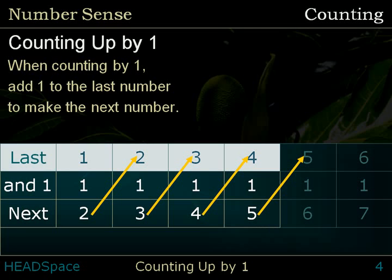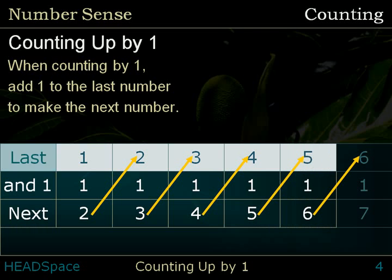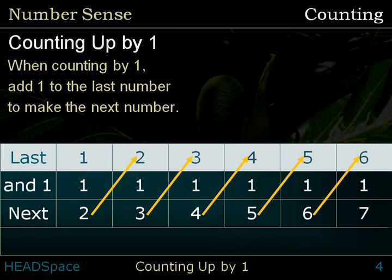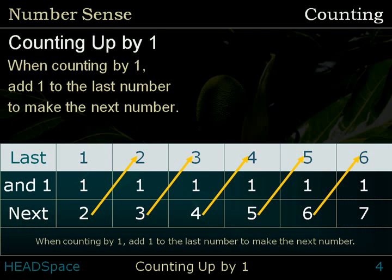Last number: 5. And 1. Next number: 6. Last number: 6. And 1. Next number: 7. When counting by 1, add 1 to the last number to make the next number.